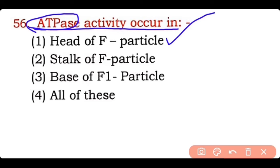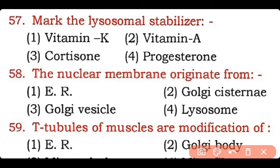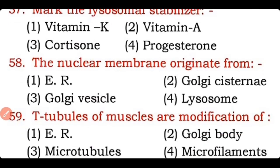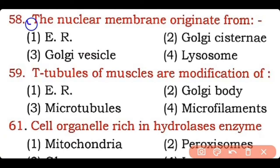Question 57: Mark the lysosome stabilizer — vitamin K, vitamin A, cortisone, or progesterone? Correct answer is option one — lysosomes are stabilized by vitamin K. Question 58: The nuclear membrane originates from — endoplasmic reticulum, Golgi cisternae, Golgi vesicle, or lysosome? Correct answer is option three — the nuclear membrane originates from the Golgi vesicle.